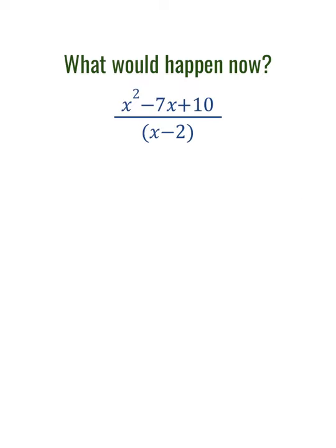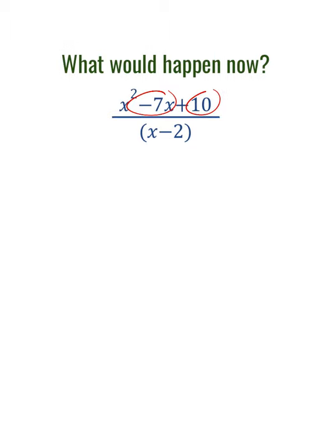When we look at a problem like this, we factor the numerator. We're looking for two values that multiply to 10 and add to negative 7. We have two negative terms, so it looks like x minus 5 times x minus 2 is what this factors to. The last term: negative 5 times negative 2 is positive 10.